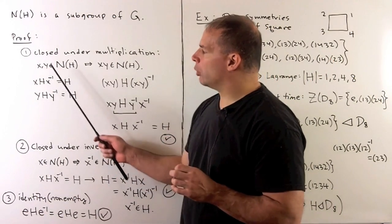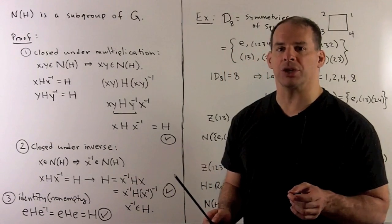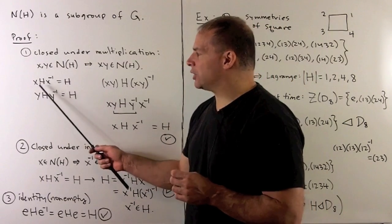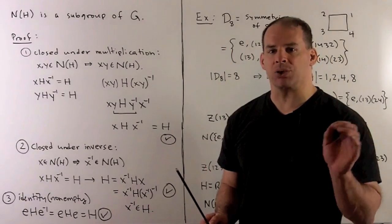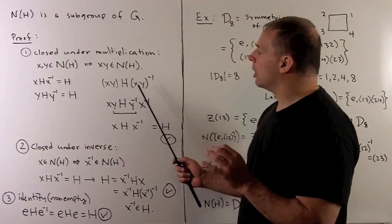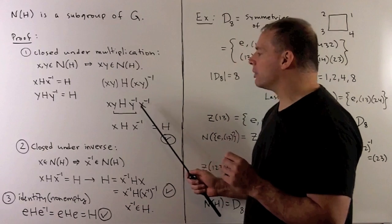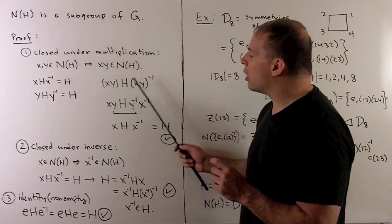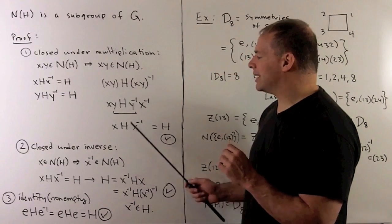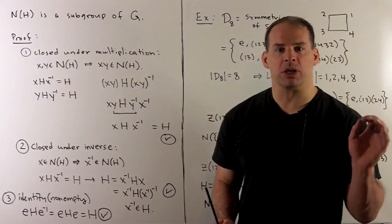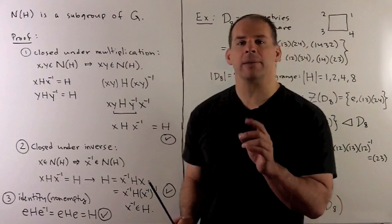For closed under multiplication, we'll pick X and Y in the normalizer and show that XY is also in the normalizer. If we conjugate H by X, we have H. Conjugate by Y, we also have H. Let's see what happens if we conjugate by XY. By our rule for the inverse of a product, we reverse the order and put an inverse on each term. On the inside, we have YHY inverse, which by assumption equals H. This collapses to XHX inverse, which by assumption collapses to H also. So XY is in the normalizer.